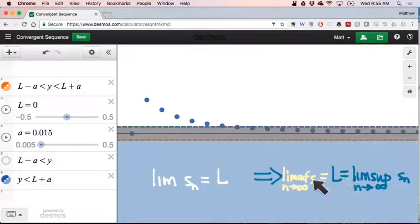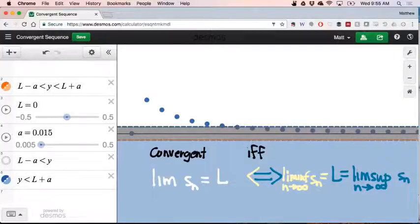and in particular, that would mean my liminf and my limsup are equal to one another. If they're equal to one another, then it also turns out that it goes the other way—that having a liminf equal to a limsup implies that our whole sequence is convergent. So we might say: convergent if and only if the liminf and limsup are equal.